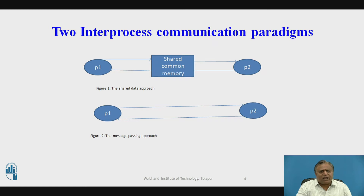In the message passing approach, information is physically copied from the sender's address space to the receiver's address space. Distributed systems use message passing inter-process communication for most applications. The IPC provides a set of message-based protocols that hide the heterogeneous platform. Two primitives — send and receive — are used by IPC. Two higher-level IPC systems are RPC (Remote Procedure Call) and DSM (Distributed Shared Memory).